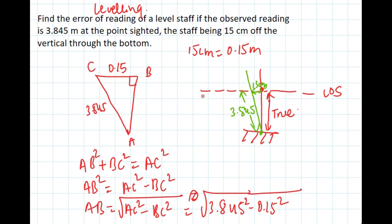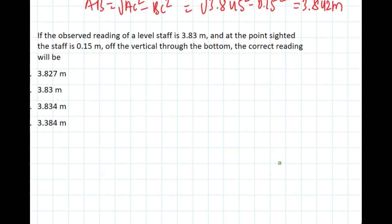3.842 meters is our answer. So the error is observed reading 3.845 minus true reading 3.842. Our error is 0.003 meters, that is 3 millimeters. Next question, similar question.